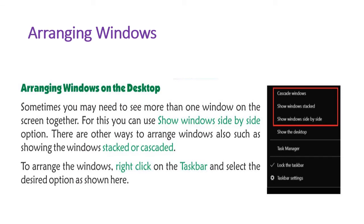Next is Arranging Windows. Sometimes we have 2-3 programs open and we want to see them all on screen at the same time. You can use the 'Show Windows Side by Side' option. There are other ways to arrange windows too, such as showing them stacked or cascaded. To arrange windows, right-click on the taskbar and select the desired option.